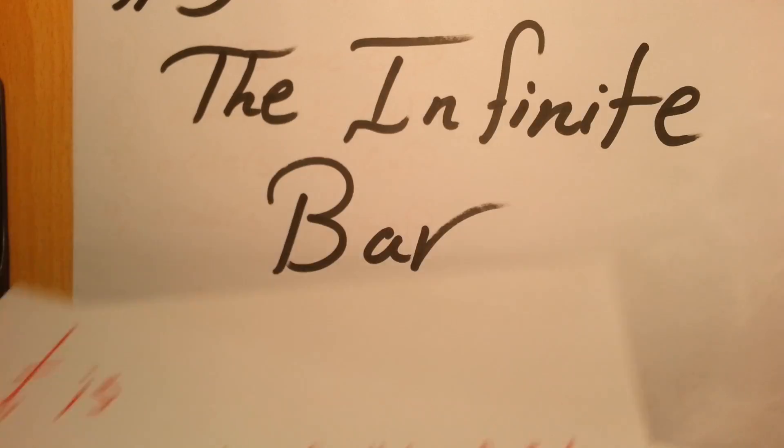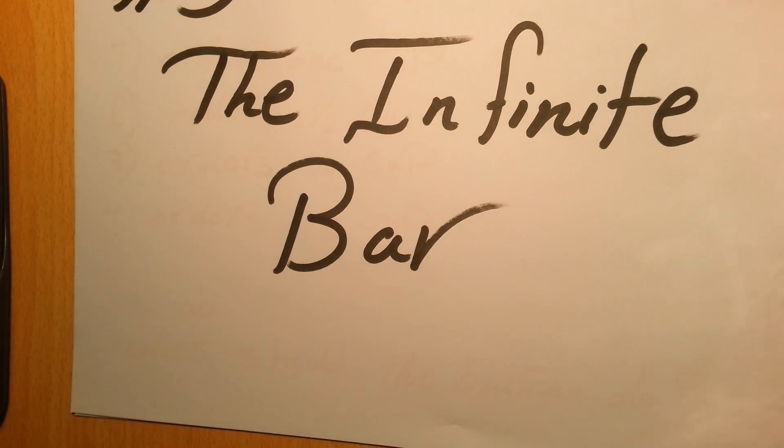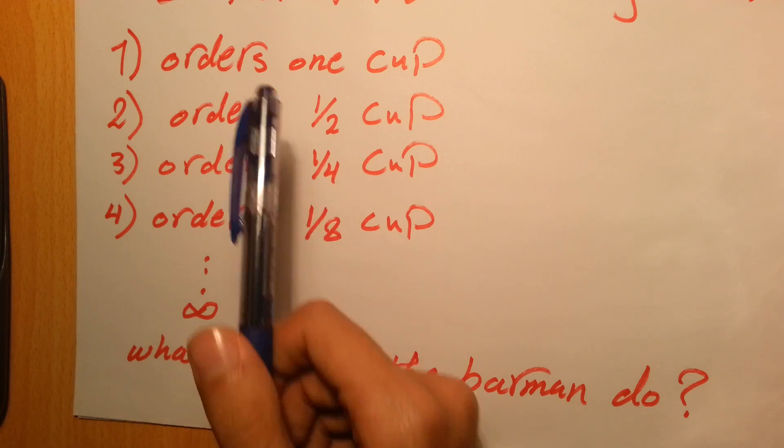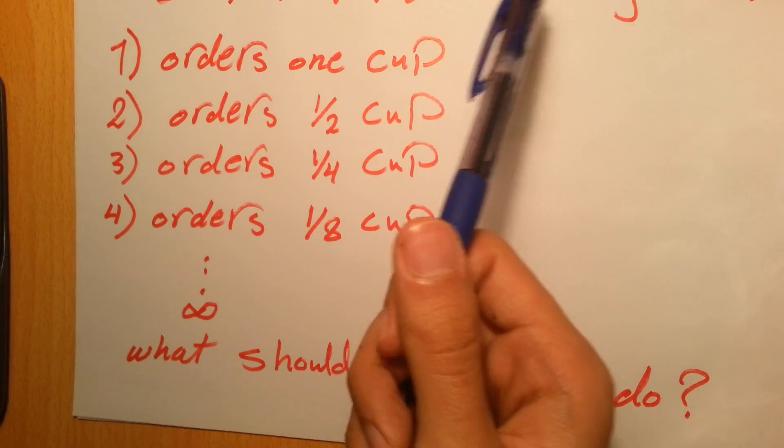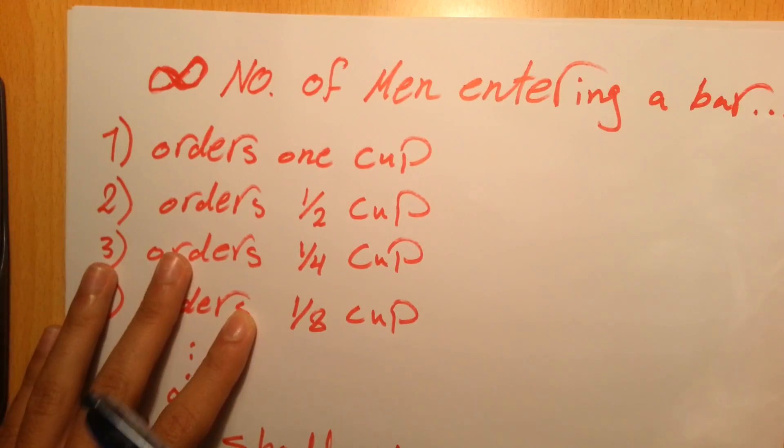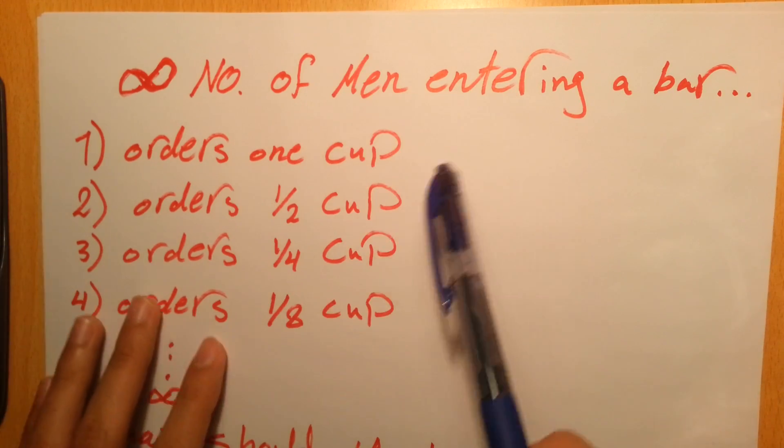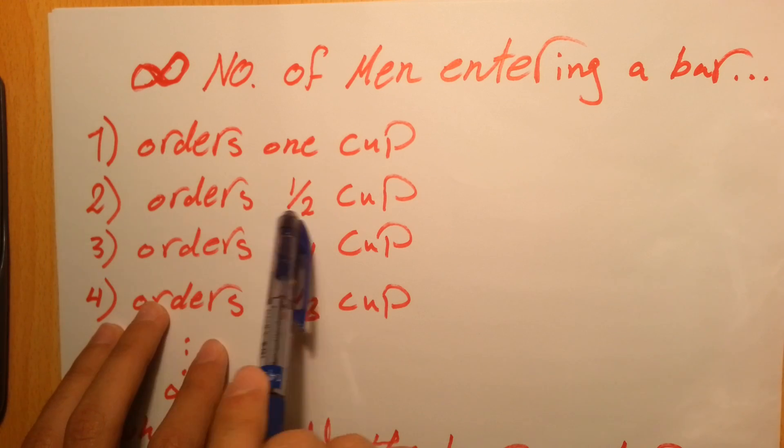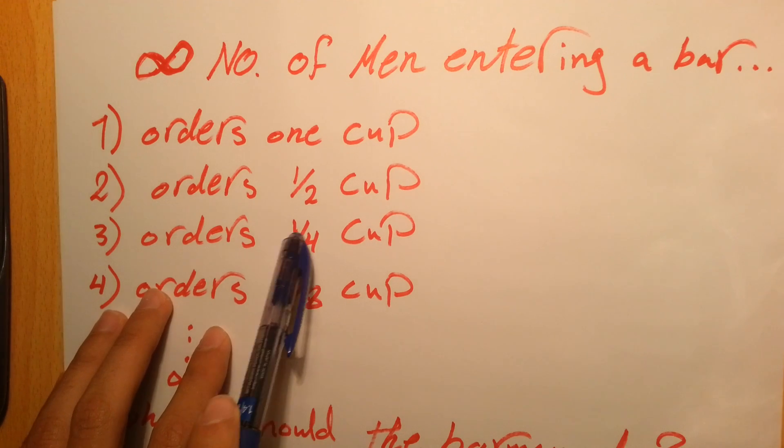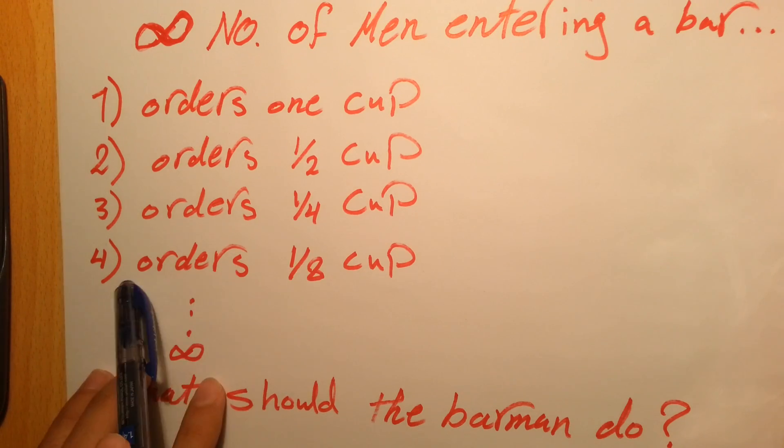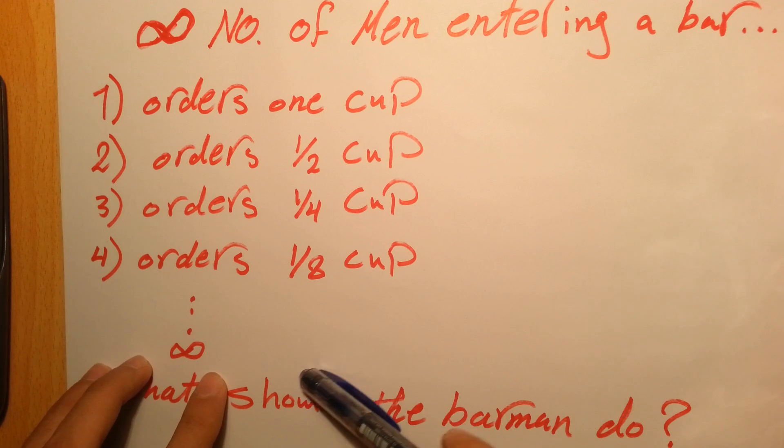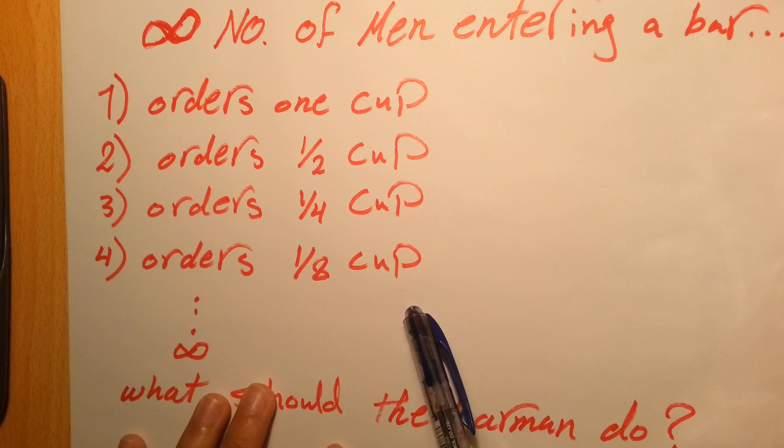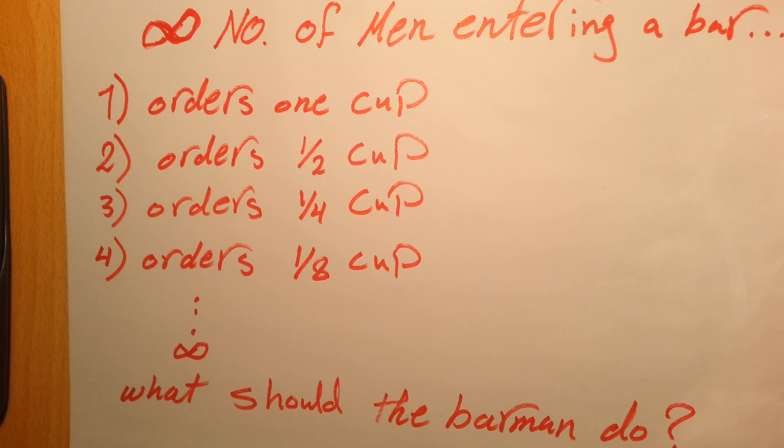The last riddle for today is the infinite bar. I call it the infinite bar. It says infinity number of men entering a bar. So the first one enters, then the second one, the third one, and so on. The first one orders one cup, the second orders a half a cup, the third orders 1/4, the next one 1/8, and the next one will be 1/16, 1/32, 1/64, 1/128.